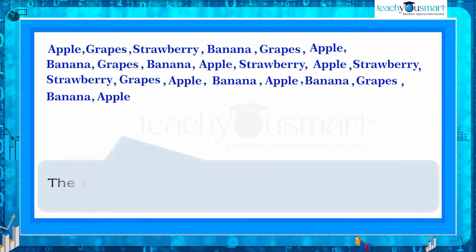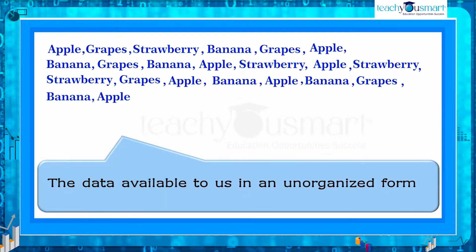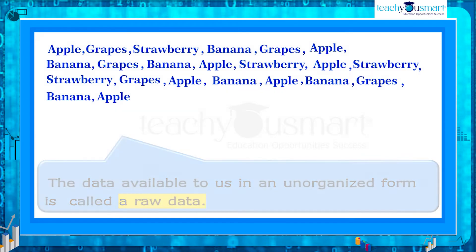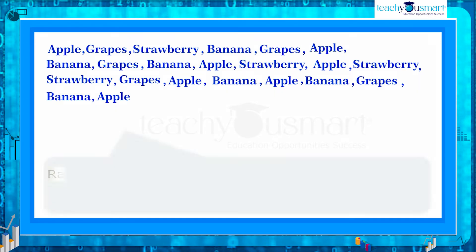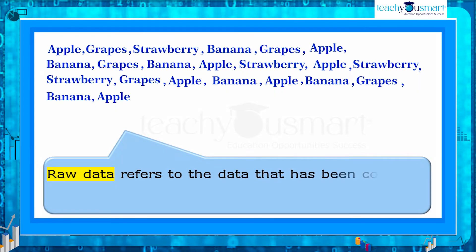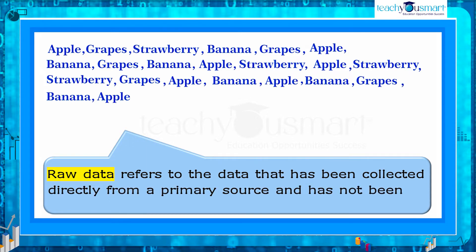So, the data available to us in an unorganized form is called raw data. Or, it refers to data that has been collected directly from a primary source and has not been processed in any way.